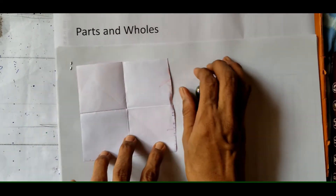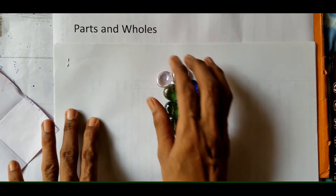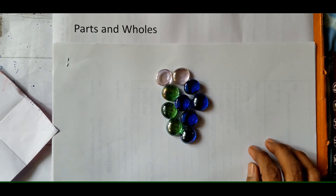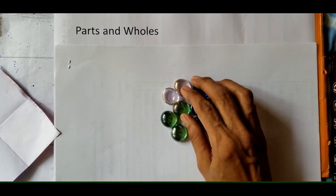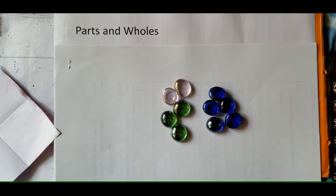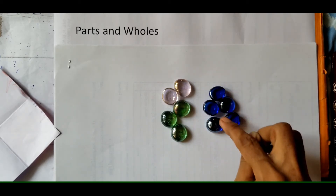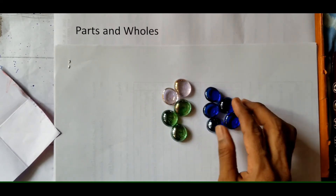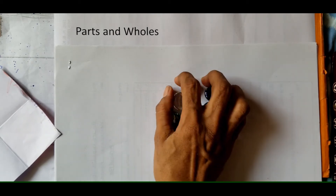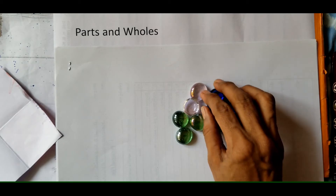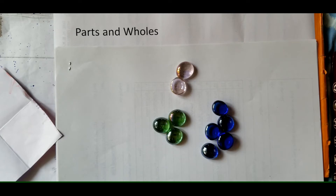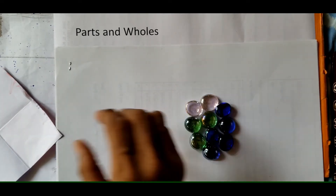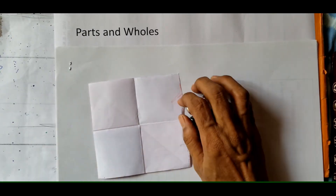Let us see fraction of a collection. I have got few crystals here — ten to be precise. Two pink color, five blue color and three green color. If I ask you, what is the fraction of the blue colored crystal? As I have five blue crystals out of ten, my fraction for blue colored crystal will be five upon ten. And for pink crystals it will be two upon ten, and for green crystals it will be three upon ten. This is how you see the fraction of a whole and fraction of a collection.